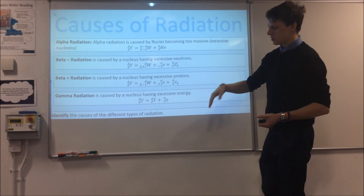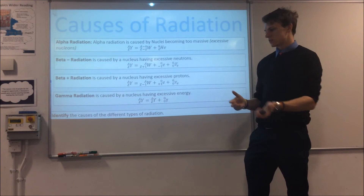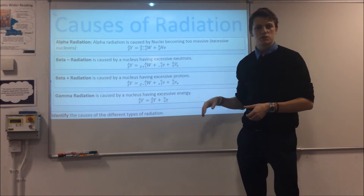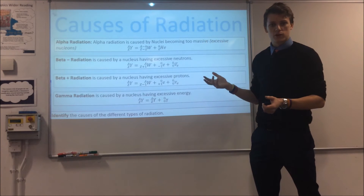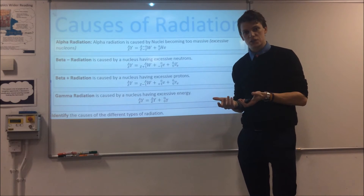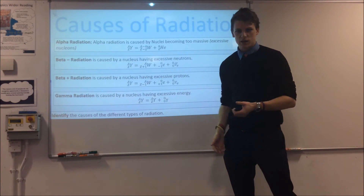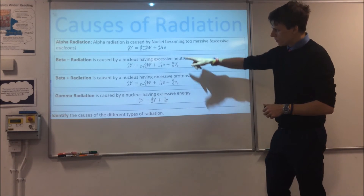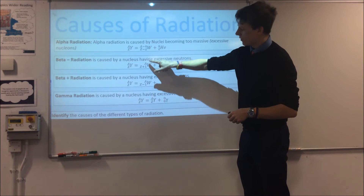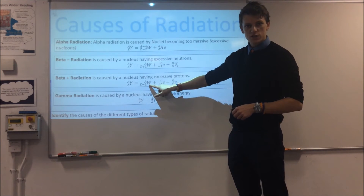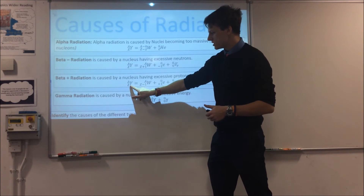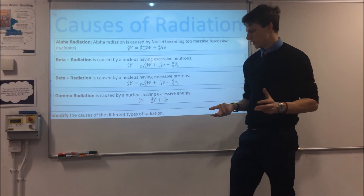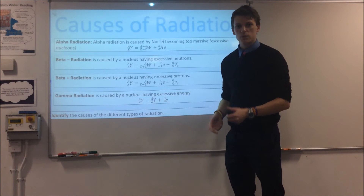Gamma radiation doesn't actually cause a change in the particles of the nucleus — it causes a change in the energy of the nucleus. This usually happens as a result of other kinds of decay: after alpha radiation, for instance, the nucleus may be left with very high energy, and its means of releasing that energy is by emitting photons of gamma radiation. Importantly, alpha and the two betas all cause a change in element — because changing the proton number changes the element — whereas gamma does not change the element, only the energy.